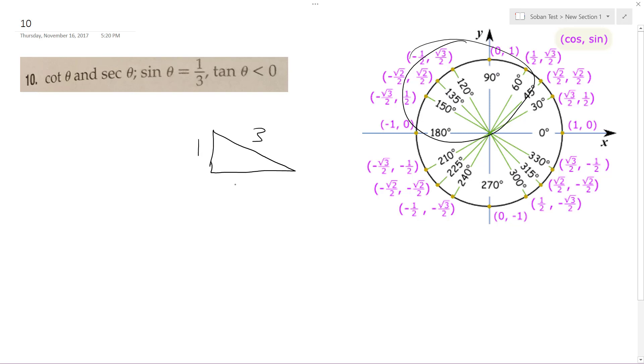And that means that the x component is going to be 3 squared minus 1 squared, which is the square root of 8, which is 2 root 2. So negative 2 root 2.